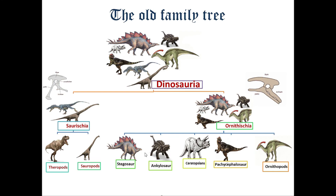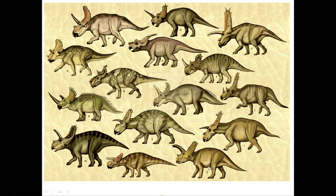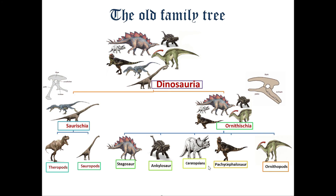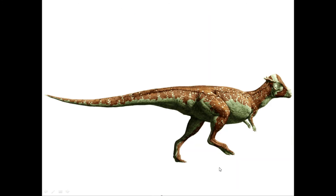Then come Ceratopsians. Ceratopsians were also quadruped and herbivore, but they had crested heads and many of them had horns on their faces, like Triceratops. Then we have Pachycephalosaurs — 'pachy' means thick, 'cephalo' means head, so thick-headed lizard. Pachycephalosaurs were a group with thick dome-shaped heads, and they were herbivores and bipeds.